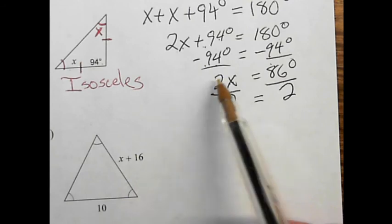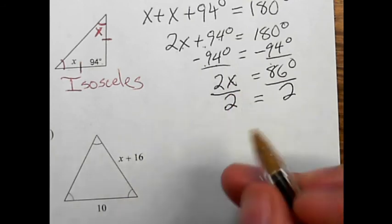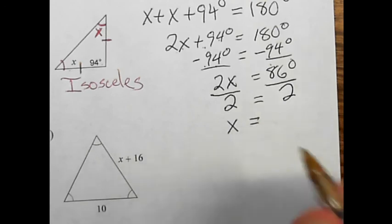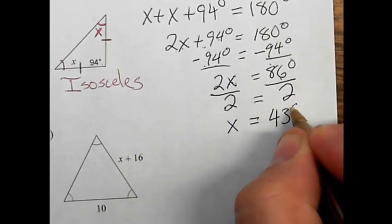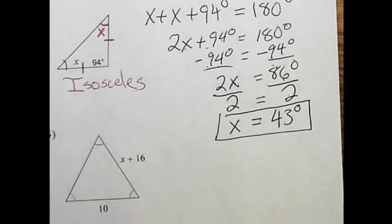2 divided by 2 is 1, and 1 times x is just x. Then 86 divided by 2 is 43, so x equals 43.